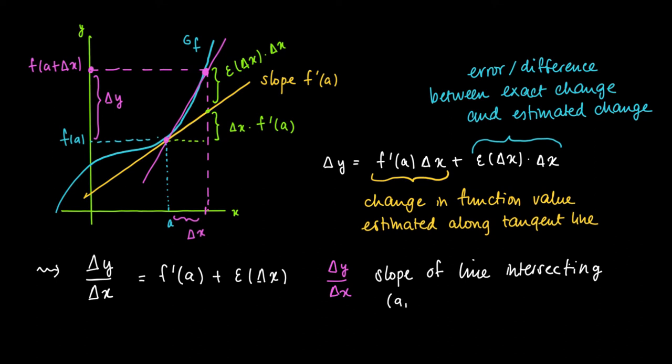So this is the slope of the line intersecting two points on the graph of f. This slope measures the change in y variable against the change in x variable.